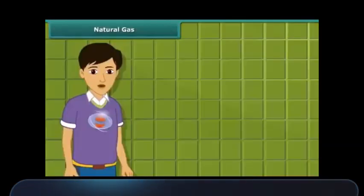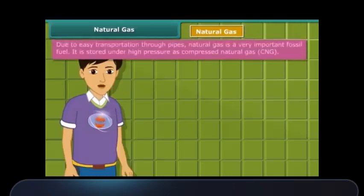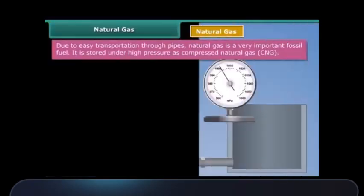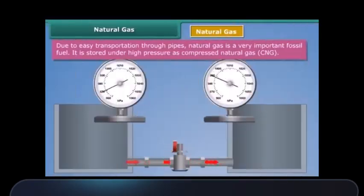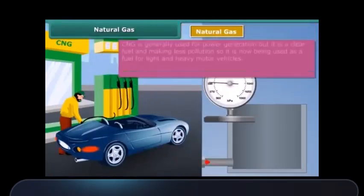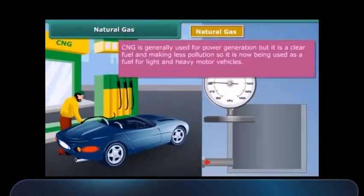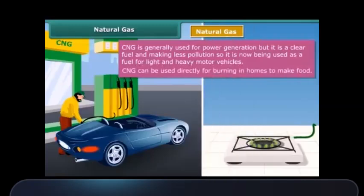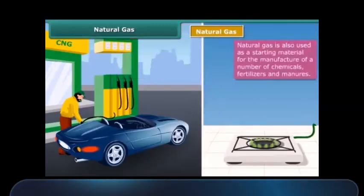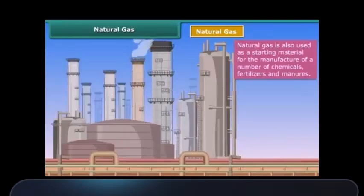Now let's move on to our next exhaustible natural resource: natural gas, also known as compressed natural gas or CNG. It is stored under high pressure as CNG and is generally used for power generation. Due to being less polluting, it is also being used as a fuel for vehicles and for cooking purposes. Natural gas is also used as a base material for the manufacture of chemicals and fertilizers.